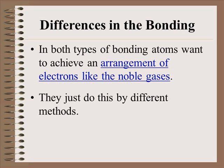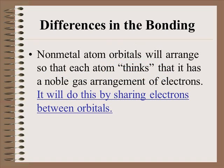In both types of bonding, the atoms want to achieve an arrangement of electrons like the noble gases. They just do this by different methods. They are still creating a stable compound. Those non-metal orbitals arrange those electrons so that each atom thinks it has a noble gas arrangement of electrons.